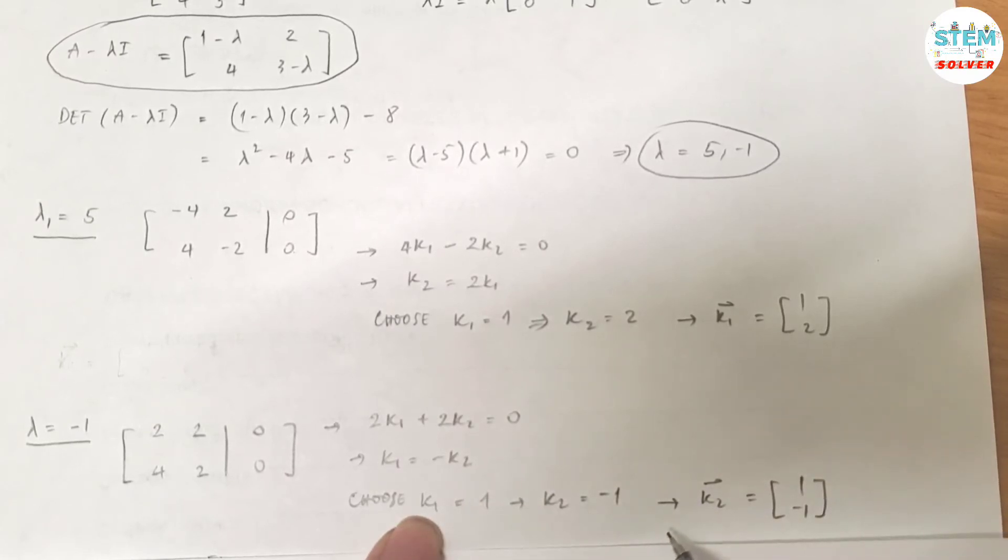Then k2 equals negative 1. You can use whatever value for k1 or k2, but I usually use 1 as a standard number. Then my vector k2 equals [1, -1]. k1, k2, which is 1, negative 1 respectively.